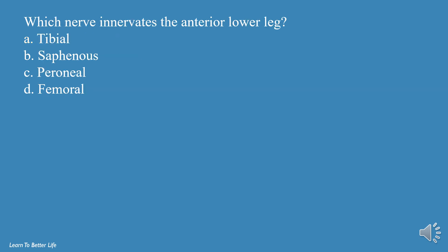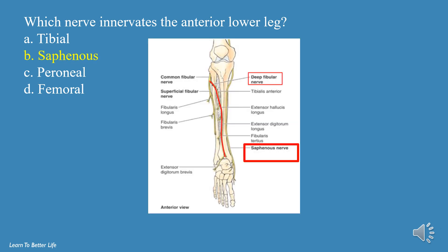Which nerve innervates the anterior lower leg? a. Tibial, b. Saphenous, c. Peroneal, d. Femoral. The answer is b, Saphenous.